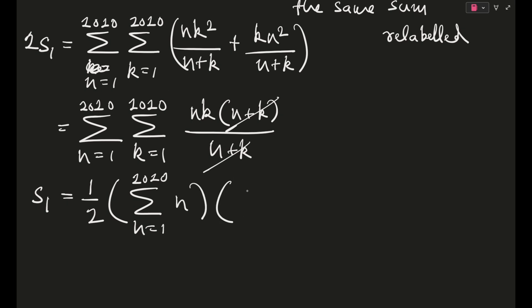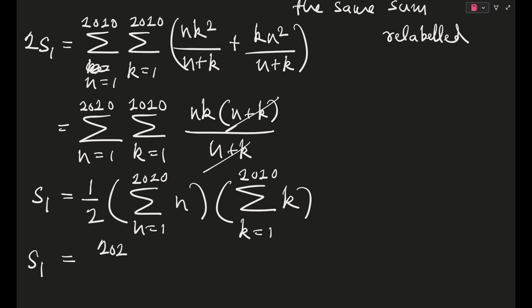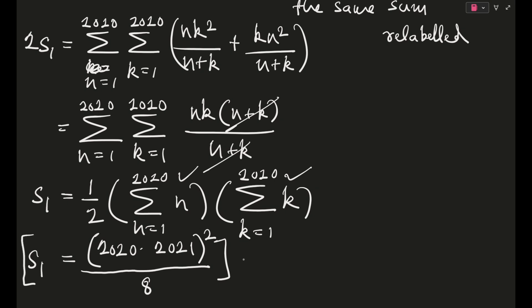Since the double sum separates, we get 2S1 = [σ(n=1 to 2020) n] · [σ(k=1 to 2020) k] = [2020·2021/2]². So S1 = (1/2)·[2020·2021/2]², and 2S1 = [2020·2021/2]² = [1010·2021]².